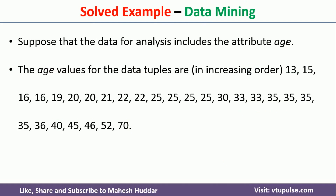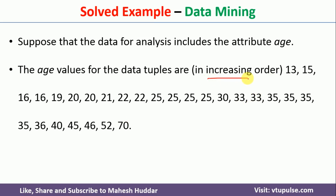In this example, we have been given age data. This particular age data contains 27 values, and all those 27 values are present in an increasing order. Sometimes data will be given in an increasing order, sometimes in random order, so the very first thing we need to do is arrange the data in increasing order. It is already given in increasing order, so there is no need to do anything here.